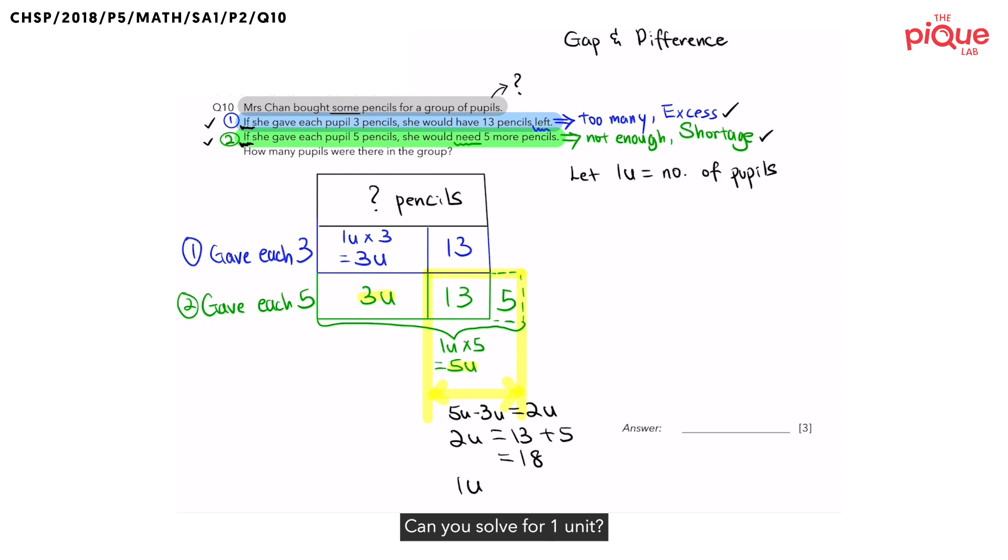Can you solve for one unit? And if you answer 9, you are on the right track. The question is asking, how many pupils were there in the group? Remember that we had helped ourselves earlier by letting one unit be the unknown number of pupils? We can now easily find the answer to the question and since we have derived that one unit is 9, the answer to the question is 9 pupils.